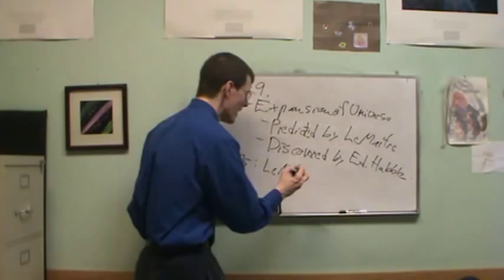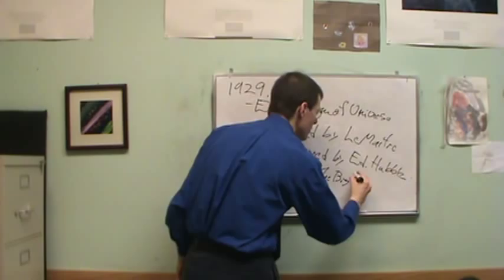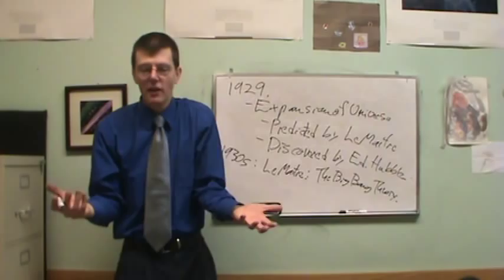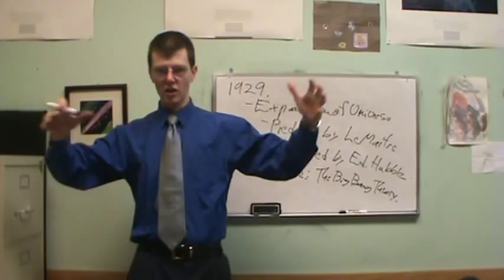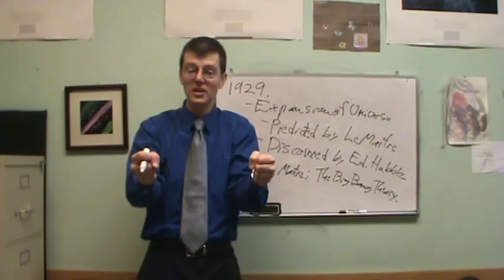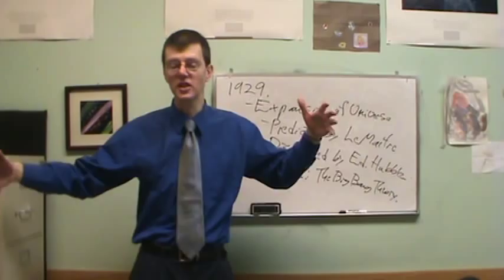And Lemaitre formulates what we now call the Big Bang Theory. It's based on this evidence of the expansion of the universe. What does that mean? It means that right now the galaxies are moving away from us at this speed. Tomorrow they're going to be a little farther away from us, and all galaxies are getting farther and farther away into the future.